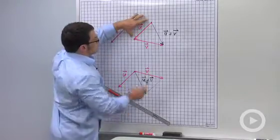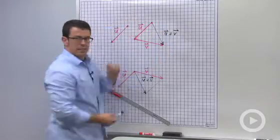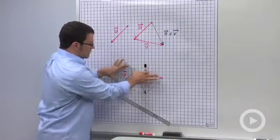And then once you get them head to tail, draw the resultant or sum as the vector that goes from the tail of the first to the head of the second. Or put them tail to tail, complete a parallelogram,